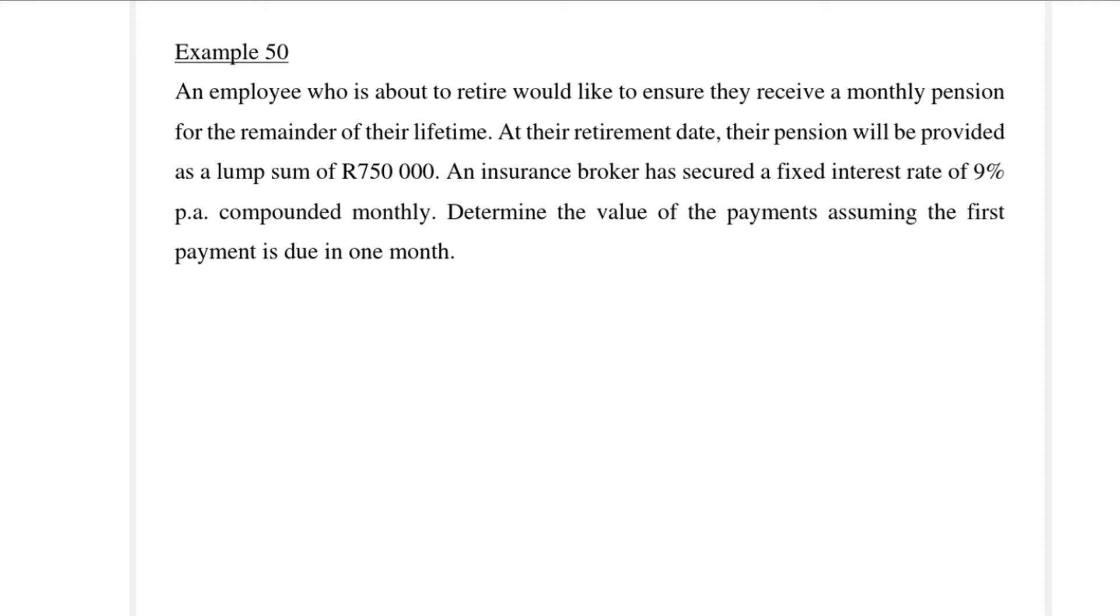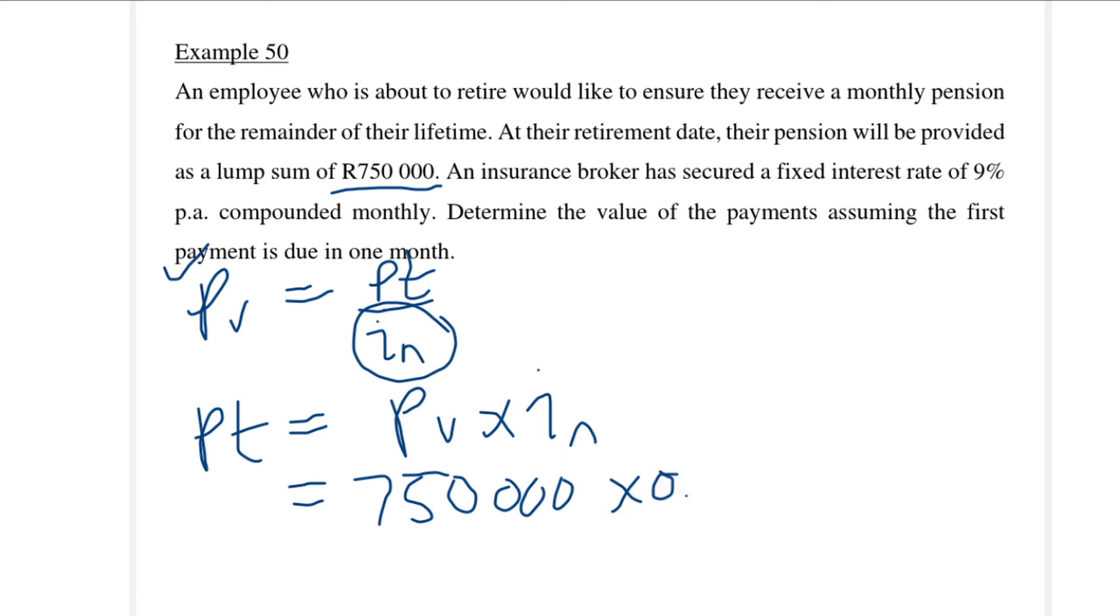The formula we have for the perpetuity is that the present value is payment over my interest rate. In this case we have for the present value $750,000 and we have the interest rate as 9% per annum compounded monthly. So from this we can calculate the payment. This 0.0075 is my effective monthly interest rate. So it's the 9% divided by 12 and that gives me 5,625 Rands.